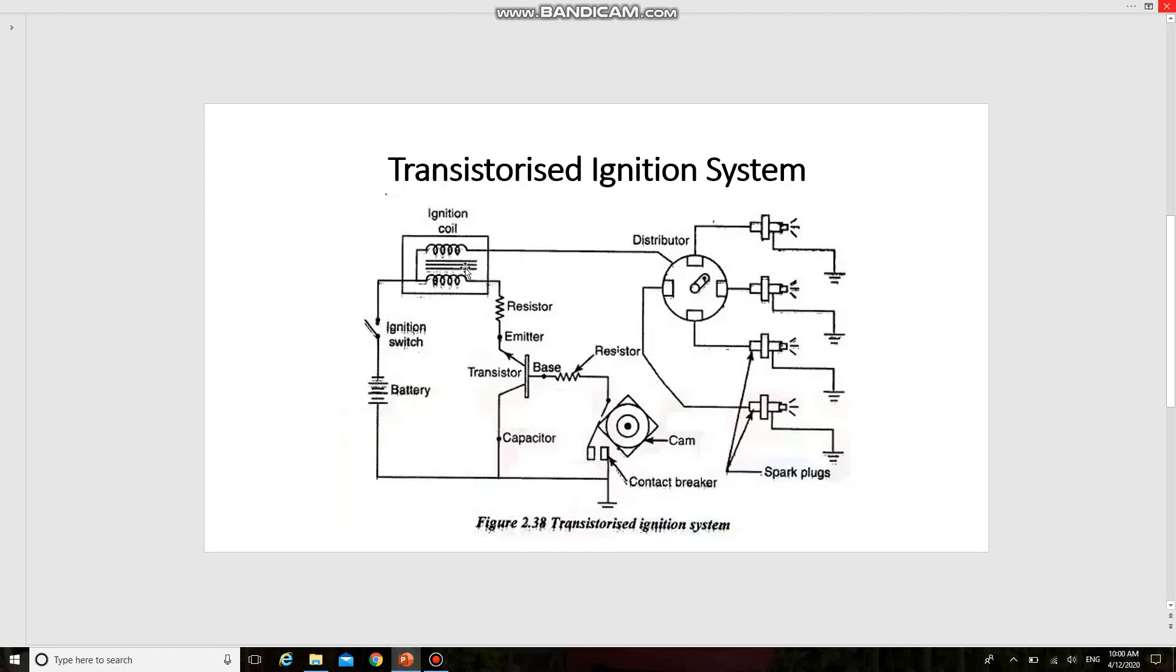When the contact breaker points are open, the current flow in the base circuit is stopped. The primary current and the magnetic field in the coil collapse suddenly due to immediate reverting of the transistor to the non-conductive state.